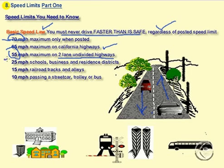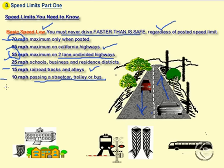In school, business, and residential districts, the speed limit is 25 miles an hour. In alleys and on railroad tracks, it's 15 miles an hour. And it's only 10 miles an hour when passing a streetcar, trolley, or bus. So as stated, this is a summary slide of speed limits.